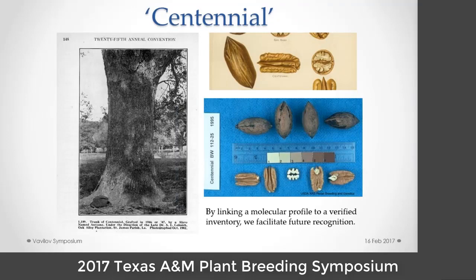Our cultivar collection includes individuals that represent the most ancient materials for our industry. Centennial was the first cultivar propagated by the slave Antoine in 1846 at the Oak Alley Plantation in Louisiana. The tree was still living in 1902 when William Taylor took that picture. By establishing molecular profiles of verified collections, it gives us the ability to verify identity, link that with phenotypic information developed over time, and create a rich picture of a native industry that's still in development.